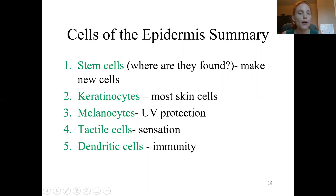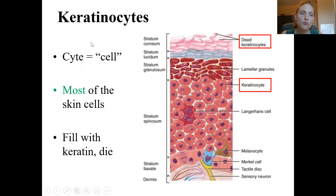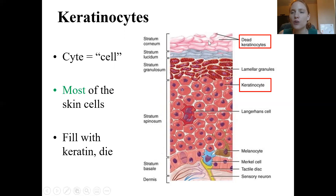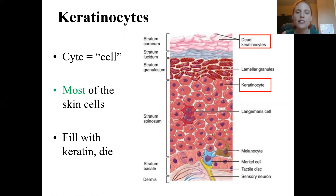The cells we're going to talk about now are the keratinocytes, the melanocytes, the tactile cells, and the dendritic cells. Remember that the suffix '-cyte' means cell. Keratinocytes are the cells that are filled with keratin. As the cells get pushed further and further up, they get more and more keratin — that protein that helps with waterproofing. By the time they reach the very top, they're basically just sacks of keratin and dead cells, which provides a lot of protection. Most of the cells of the epidermis are keratinocytes.